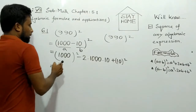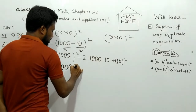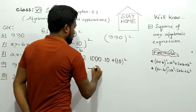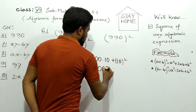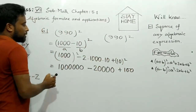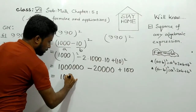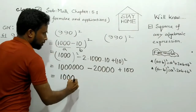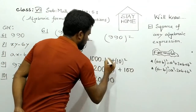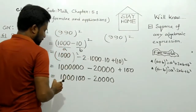1000² equals 1,000,000. So we write: 1,000,000 minus 2 × 1000 × 10 plus 100, which gives us 1,000,000 minus 20,000 plus 100.